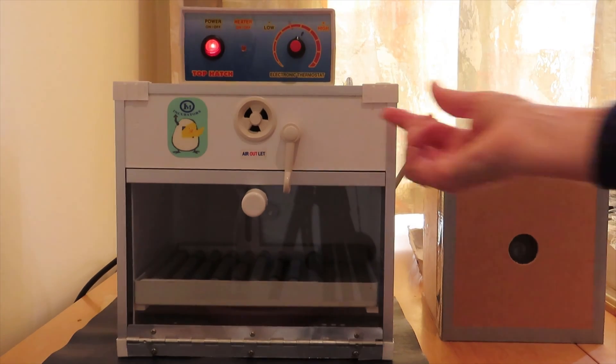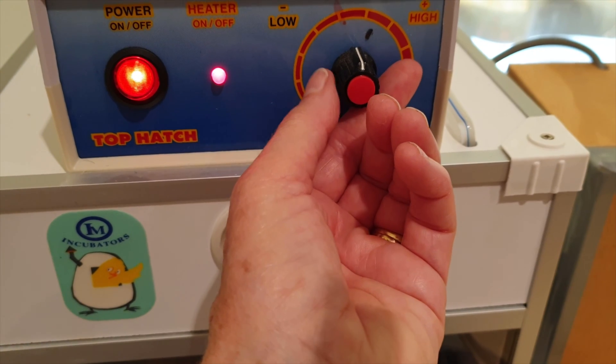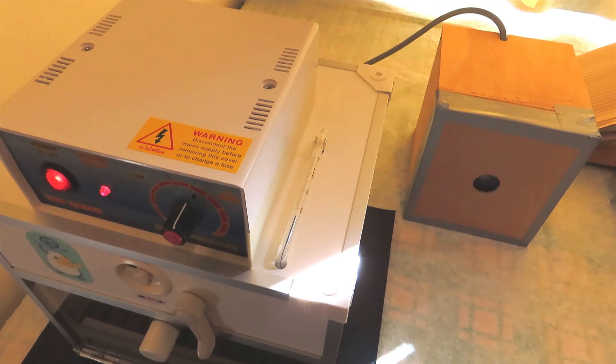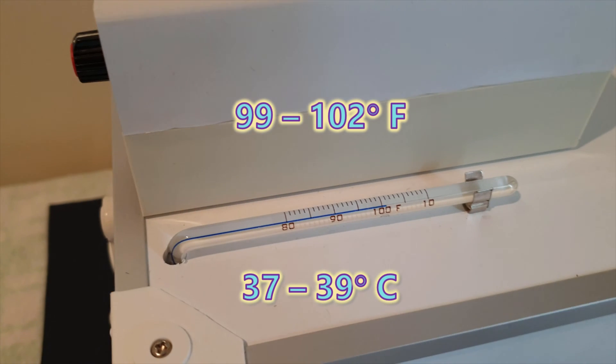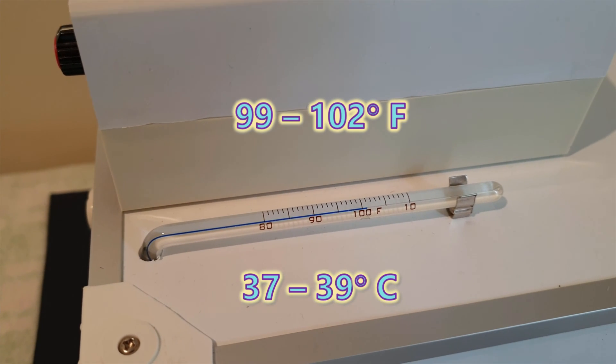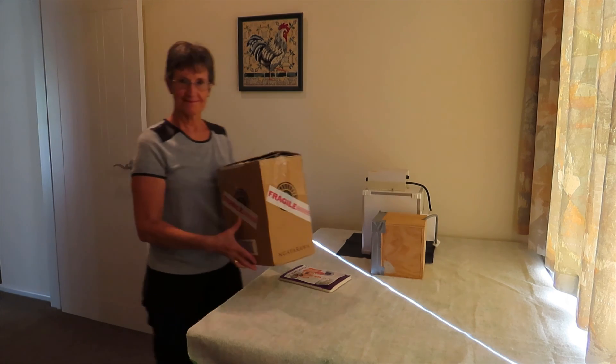The temperature is controlled by this knob. Again I've worked out just where it should be set to get the right temperature in the incubation chamber. One of the advantages of a forced air incubator like this one is that the air is always moving around the chamber so the temperature is pretty even. But it's still possible to get variations in temperature in different parts of the chamber. You want it to be between 99 and 102 degrees Fahrenheit. That's 37 to 39 degrees Celsius.